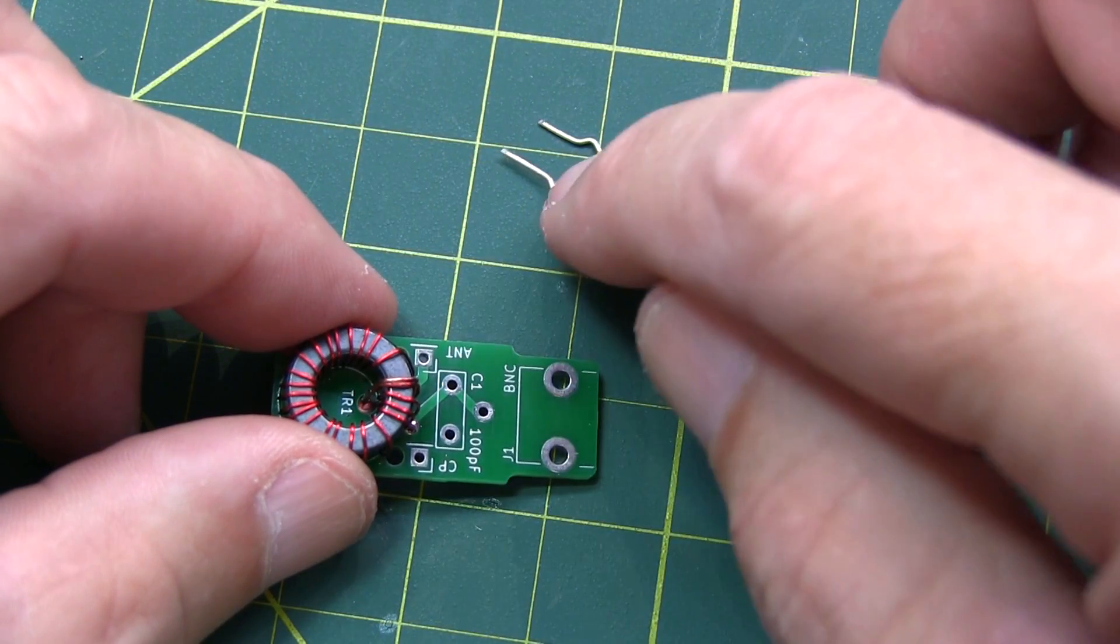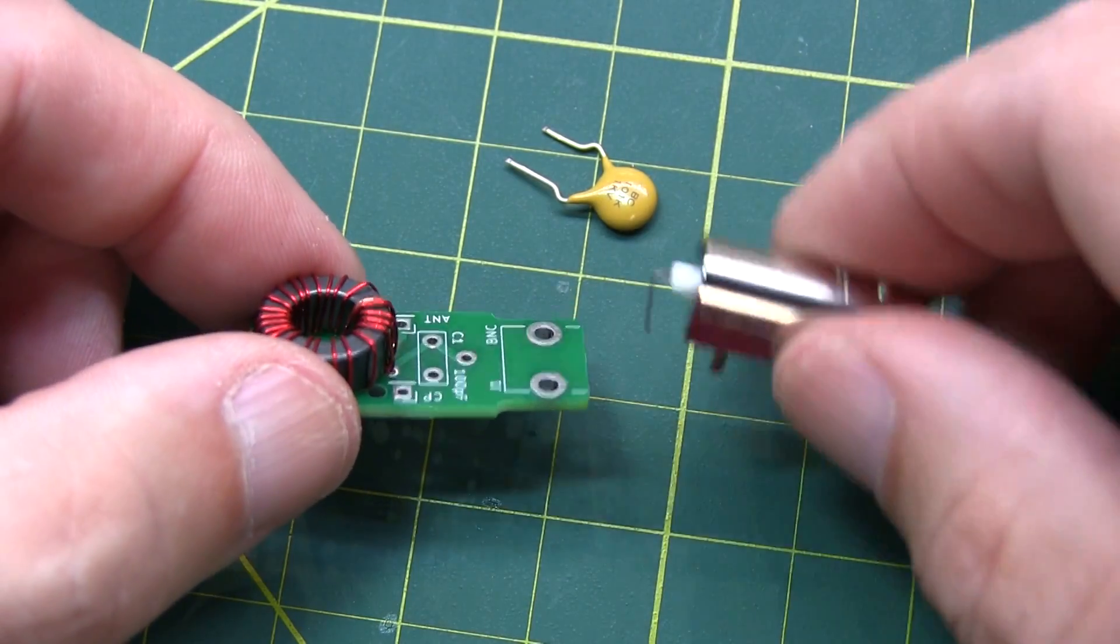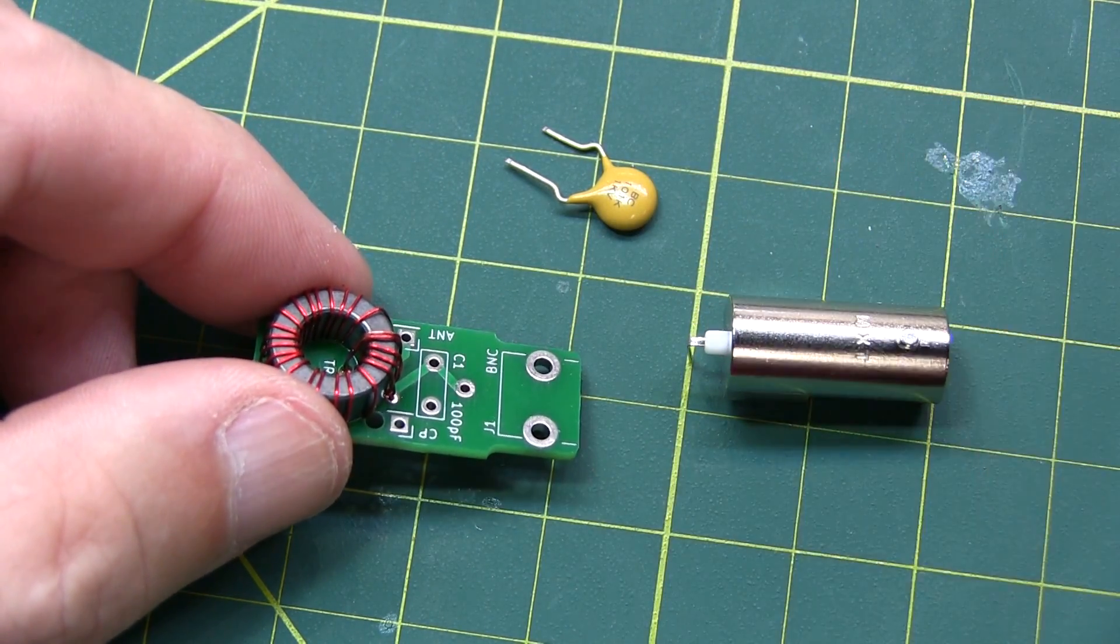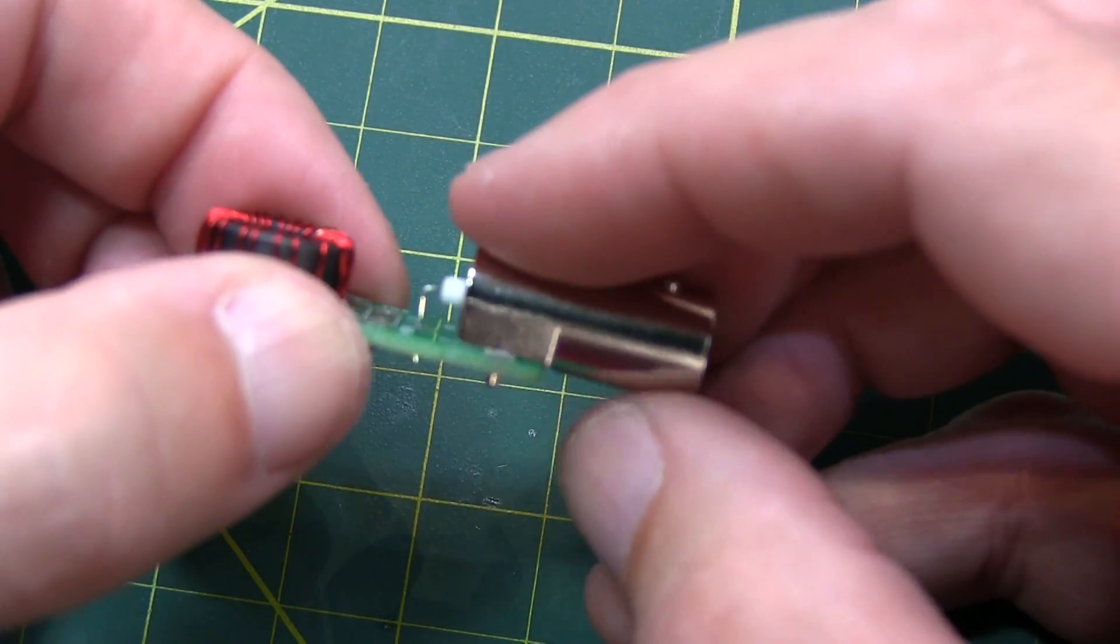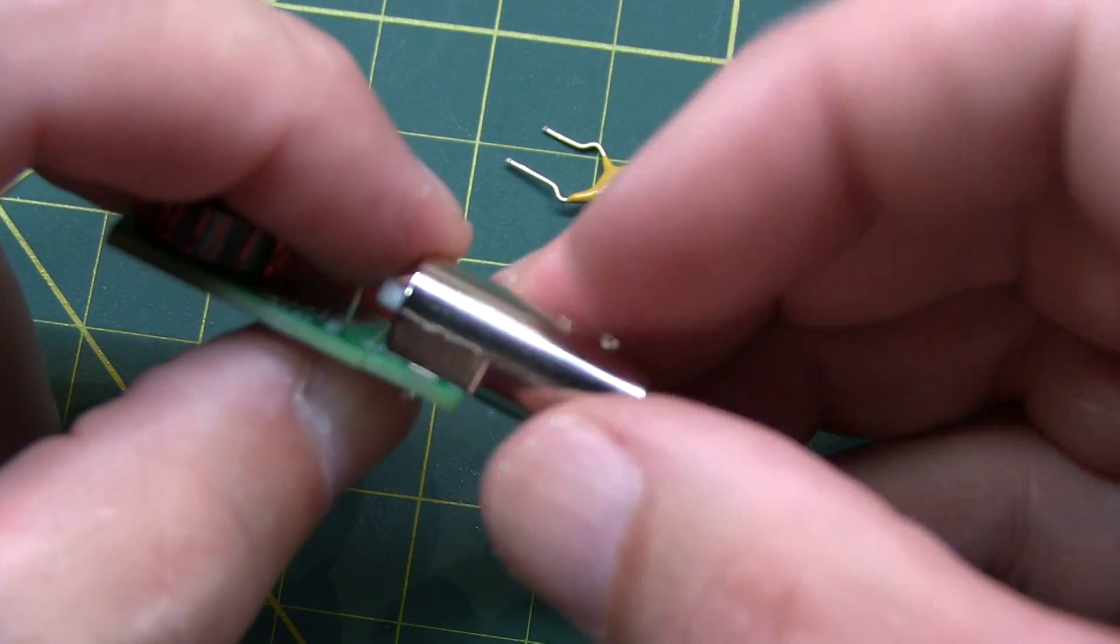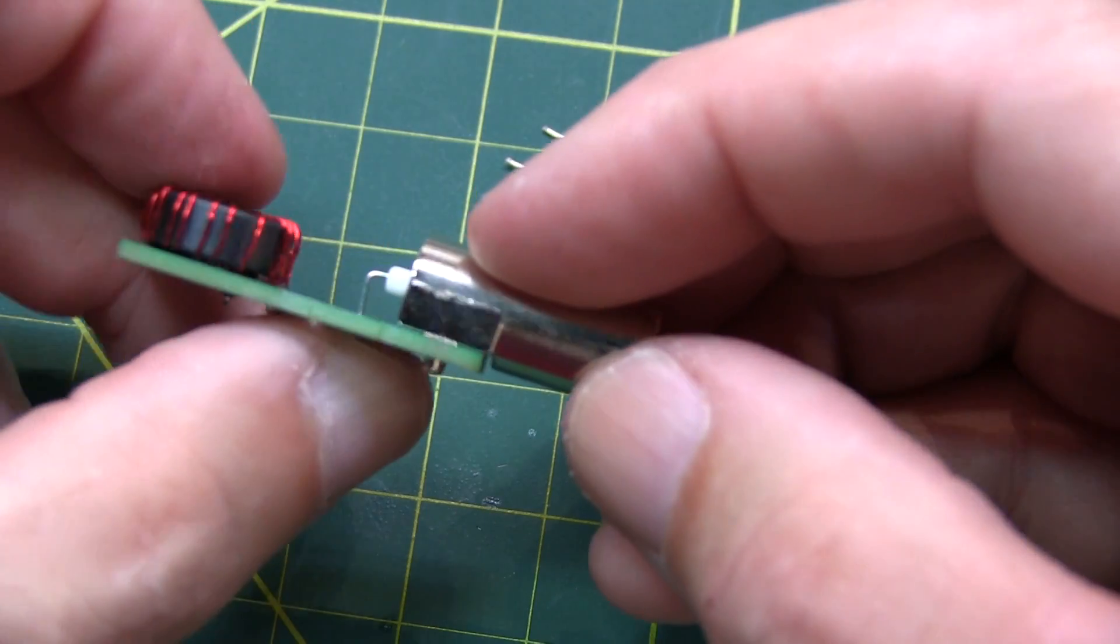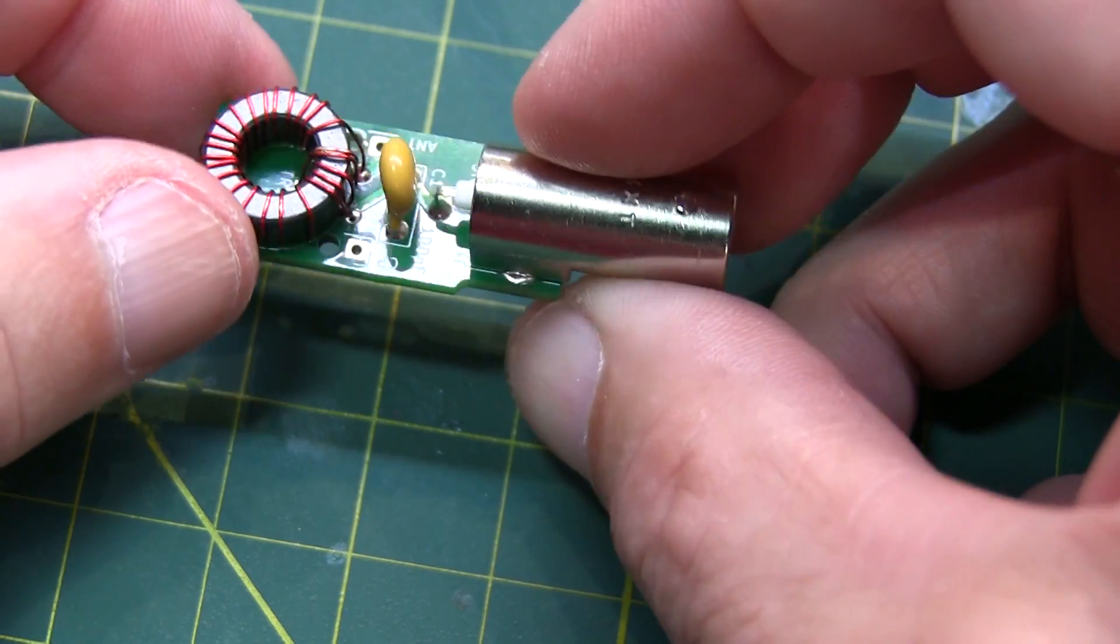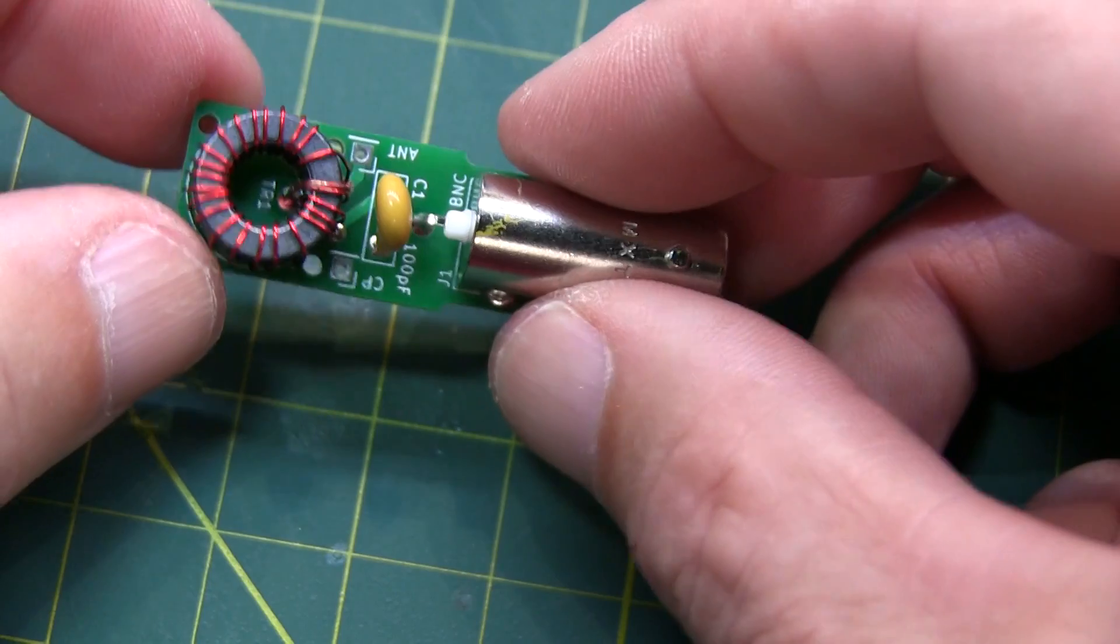The instructions say to install the capacitor next, but that stands a little bit tall and I don't want it in the way when I install the connector. So I'm going to do the connector first, then the capacitor. Take note when you install this connector, the ground connections are going to have to heat up the entire body of the connector itself, so you'll need an iron with good thermal feedback or stability. After that connector cooled off, I soldered the capacitor in, and that's basically all you've got to do for the circuit board itself.